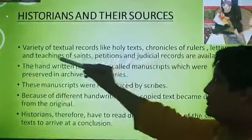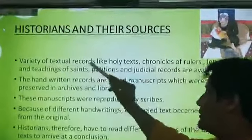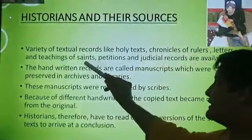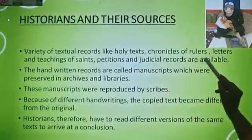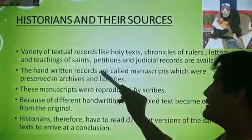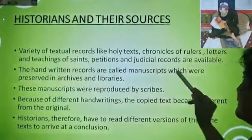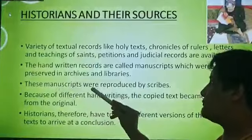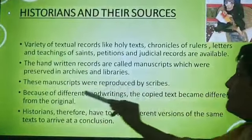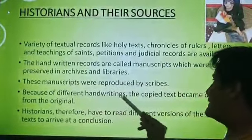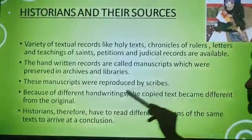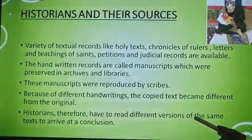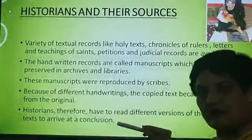Visiting historians and their sources — a variety of textual records like holy texts, chronicles of rulers, letters and teachings of saints, petitions and judicial records were available. The handwritten records are called manuscripts, which were preserved in archives or libraries. These manuscripts were reproduced by scribes. Because of different handwriting, the copied text became different from the original. Historians therefore had to read different versions of the same text to arrive at a conclusion.